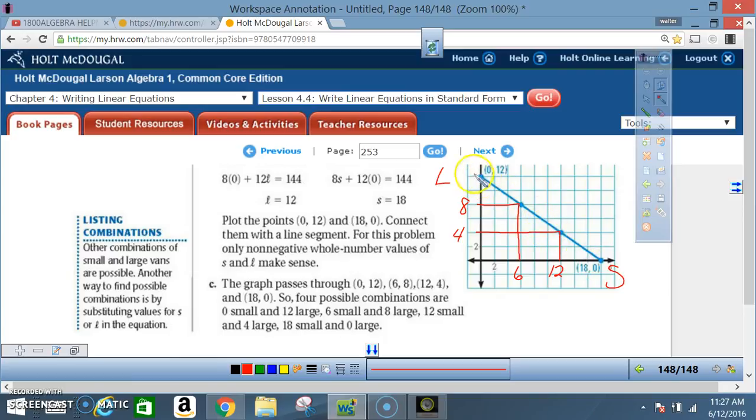But notice we only can pick points that would appear at a crosshair because they represent whole numbers. So we got four combinations all together, 1, 2, 3, 4.